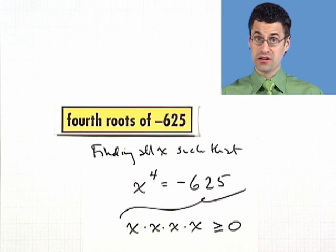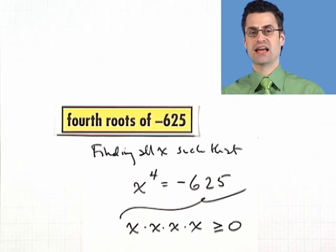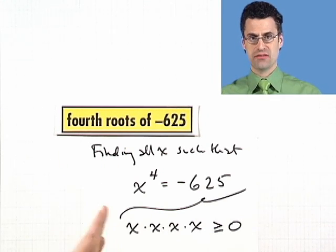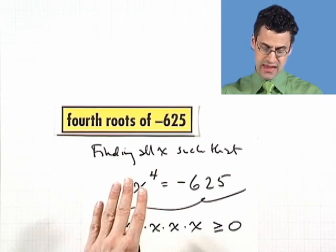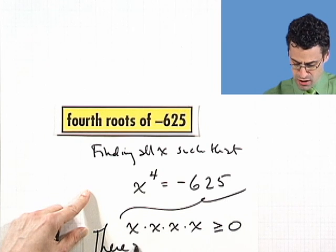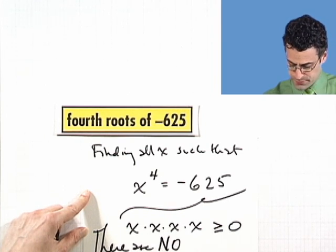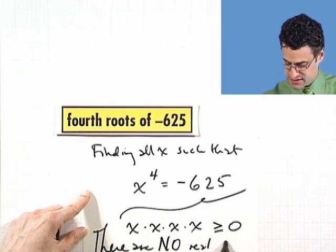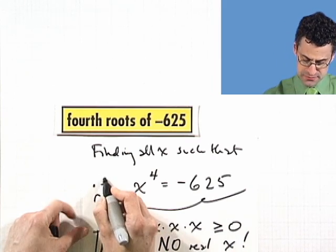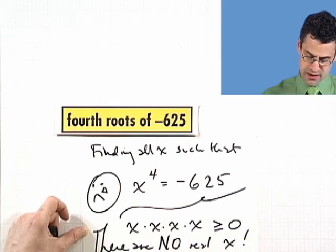In the previous example, when we were looking for the cube root, that was an odd root. We can actually have odd roots of negative numbers. That's completely fine. But we can't have even roots of negative numbers. There are no real numbers that will actually satisfy that. So here, the answer is find all x. There are no x. There are no real x. So that's maybe sort of sad. Maybe it puts a tear to your eye. But the point is, that's the truth. So you've got to be careful with roots. We can't take an even root of a negative number.